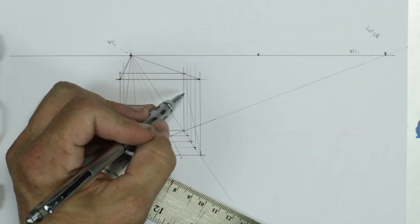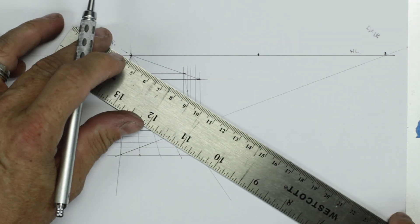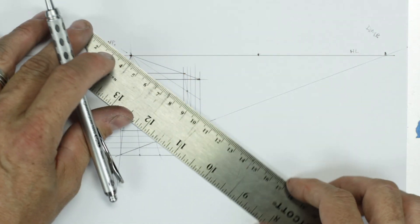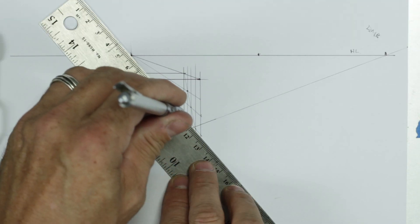And then where they cross the diagonal. Here. Here. And here. I'll run those back to our vanishing point. Here. Here. And finally. Here.